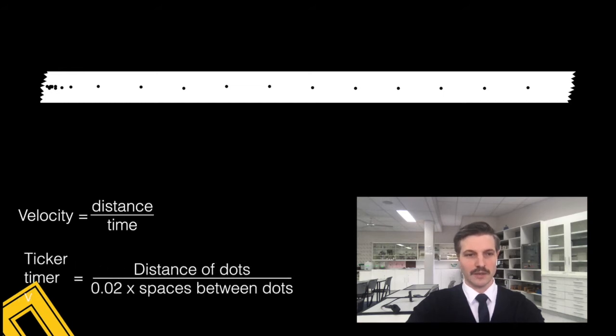Our formula for velocity is distance over time, so we should be able to work something out here using these dots because we have a distance that they've traveled clearly, and we know the time interval between each dot. So our ticker timer velocity will equal the distance that the dots have traveled.